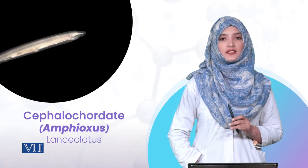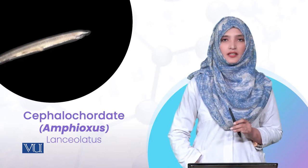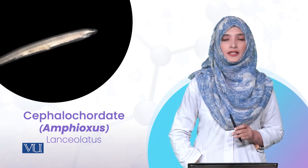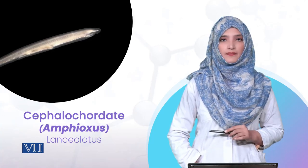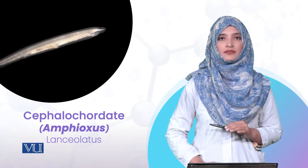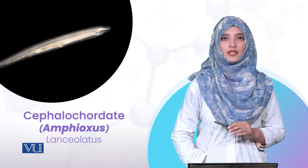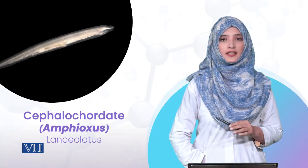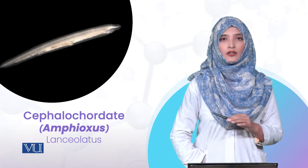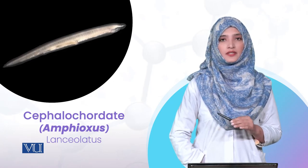Now we will discuss Amphioxus, also known as Lancelet, which we commonly call Lancelet. Looking at the general and external characteristics, the body is transparent, and both ends — front and posterior — are pointed and elongated. The size is approximately 5 cm.